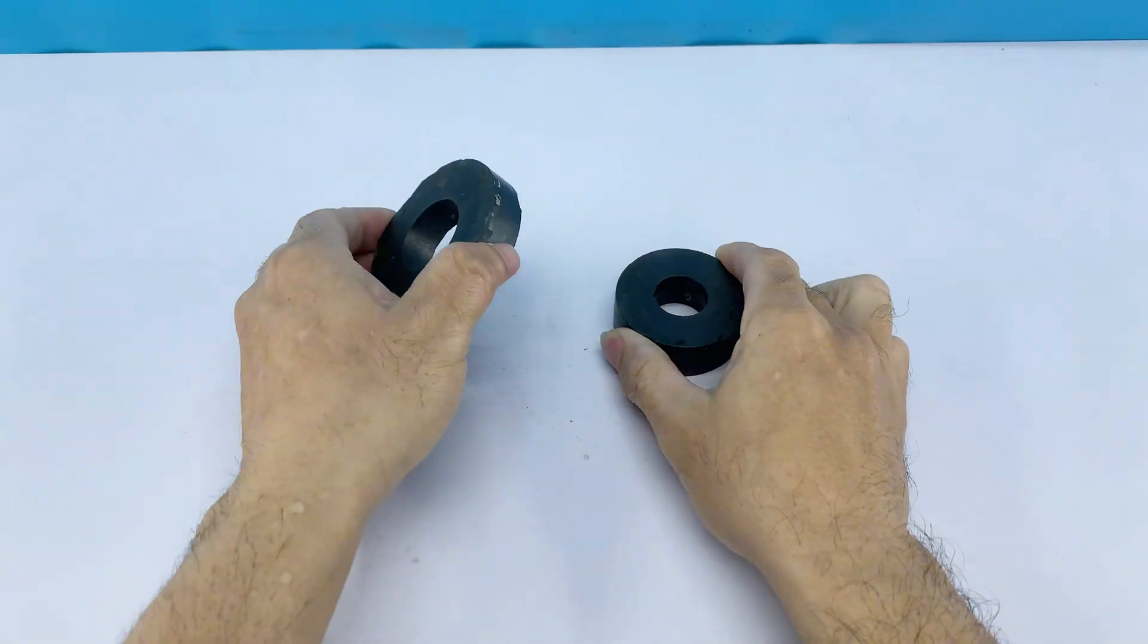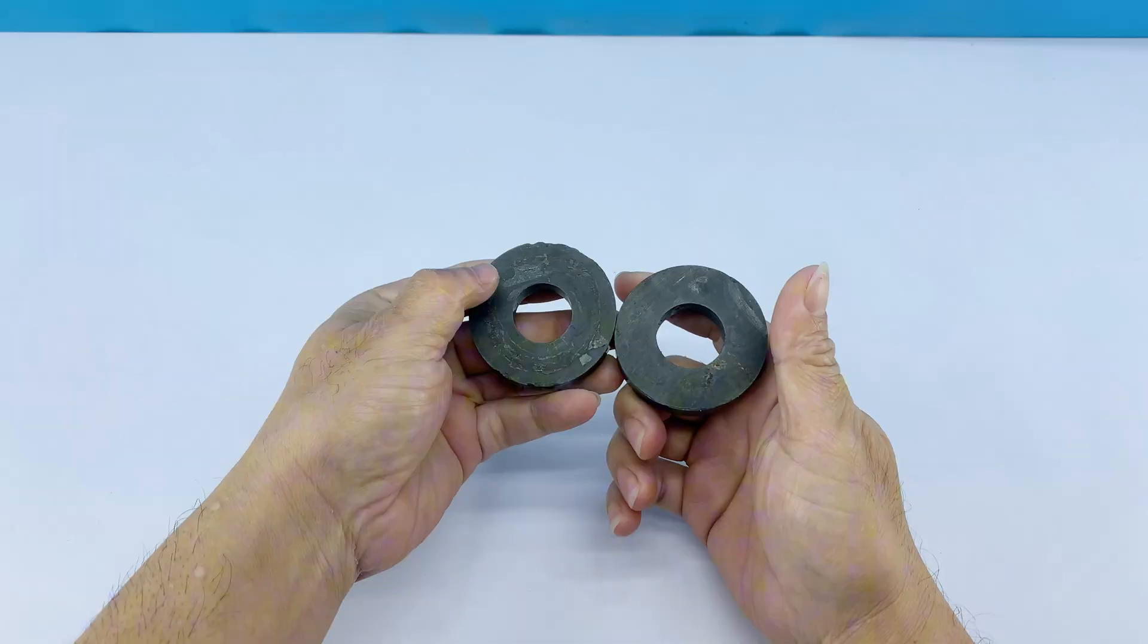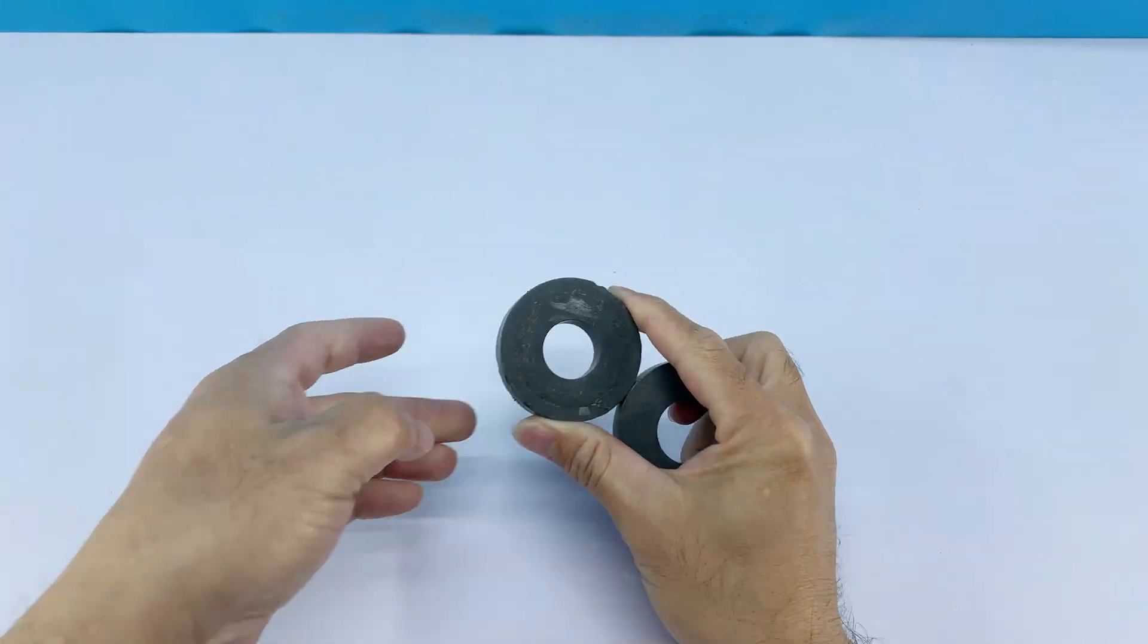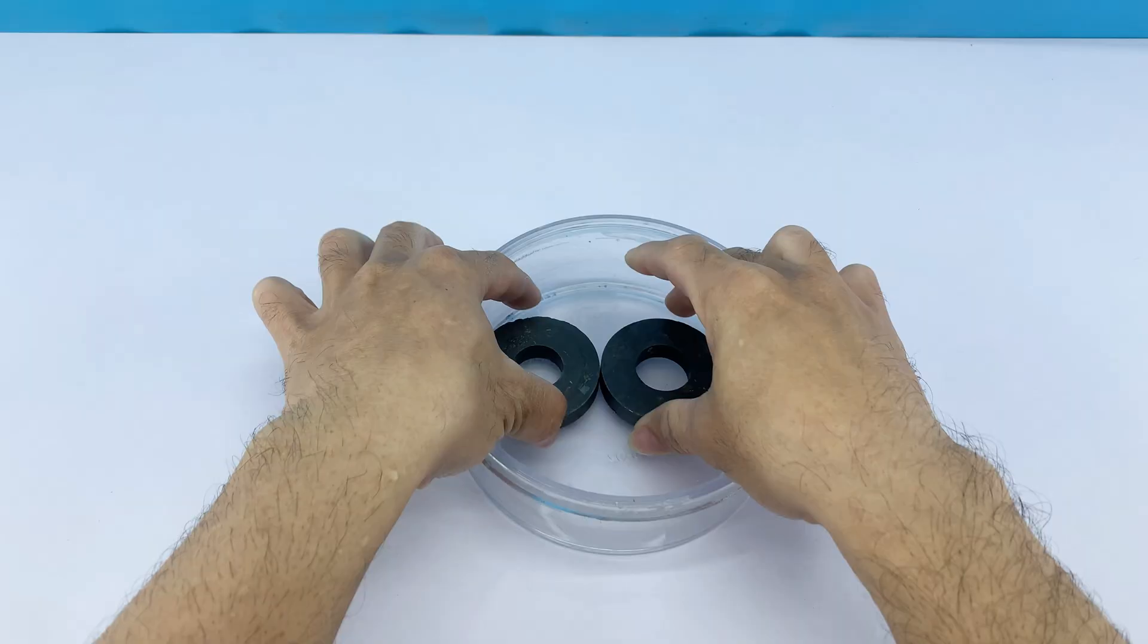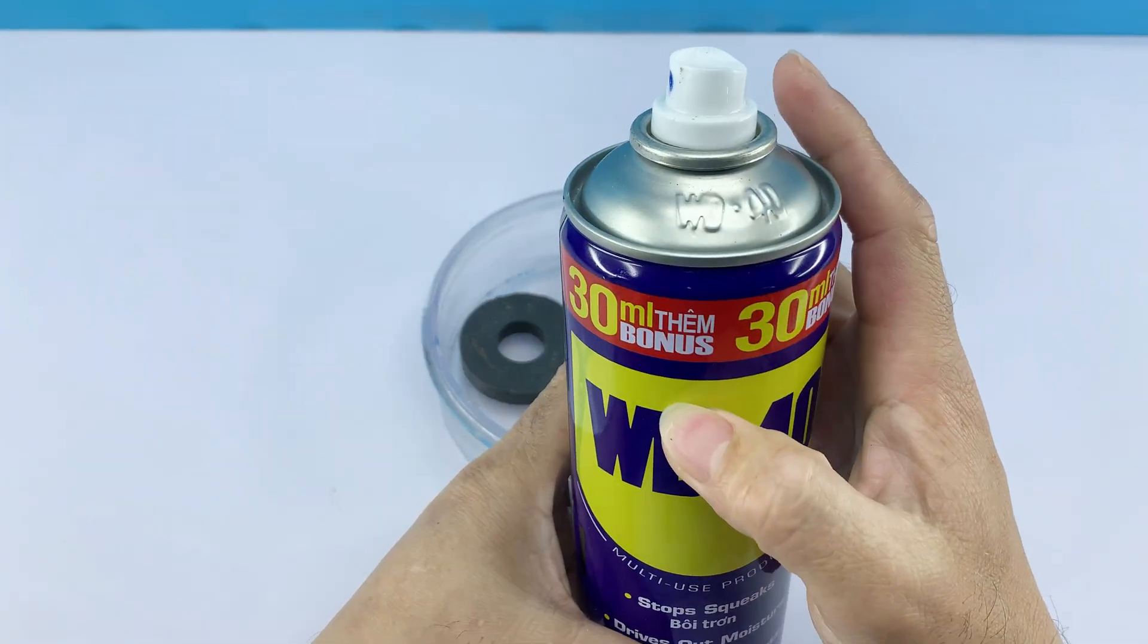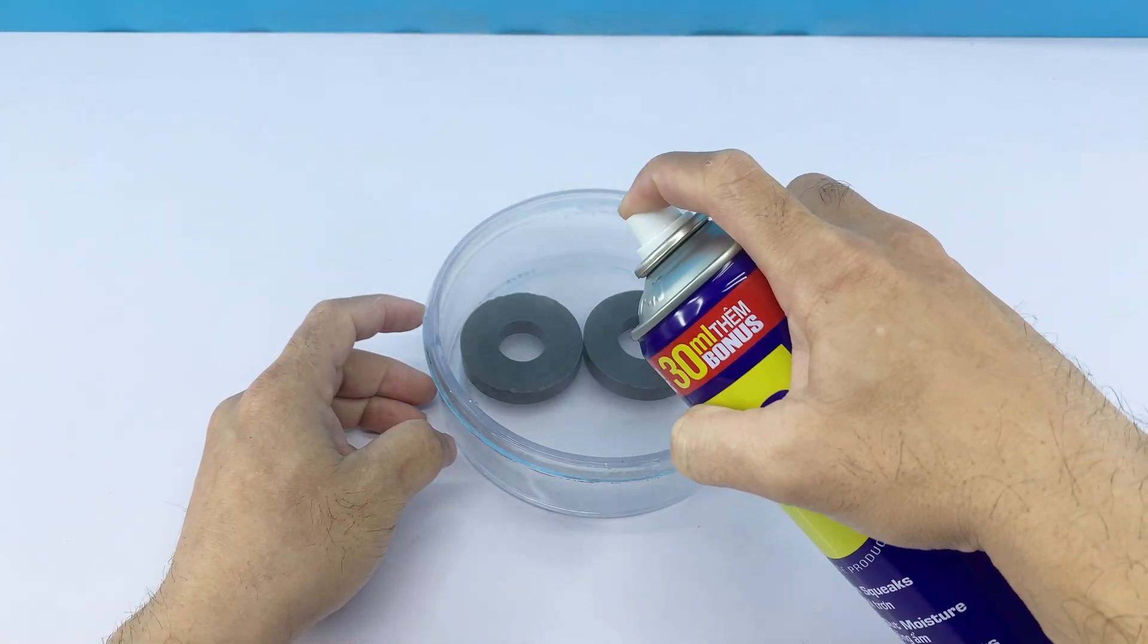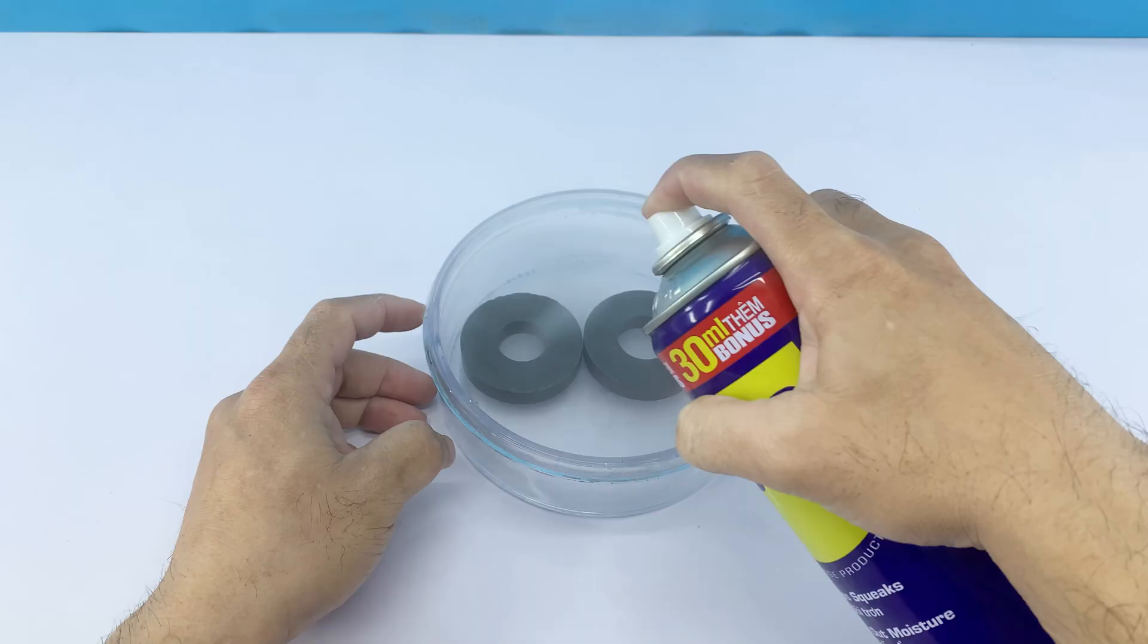I'm starting with two ferrite rings. They appear a bit grimy, so my first step is to clean them thoroughly. I'll place them in a small bowl and generously spray them with WD-40. This helps loosen any dirt, rust, or residue that has accumulated over time, ensuring a clean surface for our next steps.